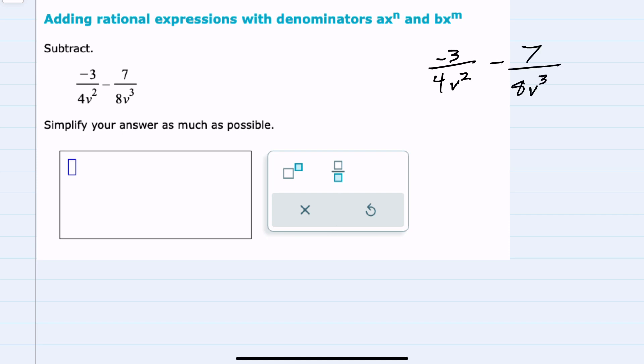Since we're subtracting fractions, our first step is going to be to identify the least common denominator. Our two denominators being 4v² and 8v³. The lowest common denominator, looking first at the numbers 4 and 8, we would need an 8, which would be the lowest common denominator just for the numerical portion.